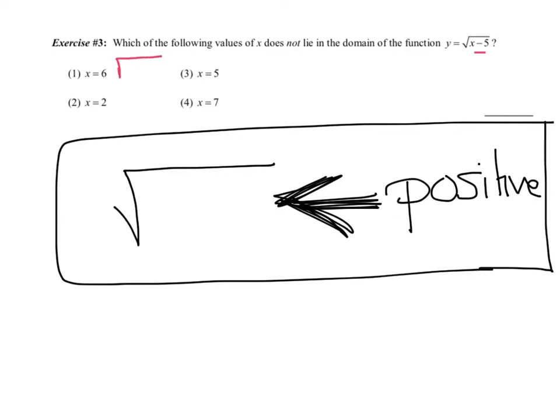If I plug a 6 into x, 6 minus 5 is 1. Taking the square root of 1 is allowed. Choice 3: If I plug in a 5, I'm going to get the square root of 0. The square root of 0 is allowed. That is not a negative number. If I plug in 2, I'm going to get the square root of negative 3. Am I allowed to take the square roots of negative? Well, no. So, that, of course, is my answer. And lastly, if I type this one, I'd have the square root of 2, which isn't pretty, but it's allowed. So, anybody that gets you a negative is not in the domain.